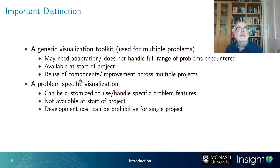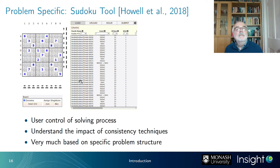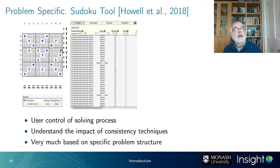A problem-specific visualization — the sky is the limit if you have enough time, but budget will be an issue. Here we have a relatively simple problem-specific tool: the Sudoku tool from Howell and others at CP 2018, where you can see how constraint solvers deal with different consistency techniques for Sudoku puzzles. You can see the puzzle itself, interact with it, observe what's happening inside the database, choose different methods — but it's dedicated to Sudoku and can't easily be used for something else.